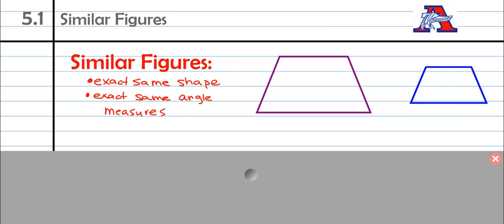And with that they actually have the exact same angle measures. The difference between similar figures and congruent figures is that similar figures have different sizes. So basically you're going to have a little shape and a big shape or a big shape and a little shape. I have an example over to the right, those are trapezoids.